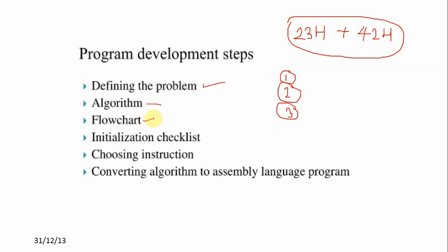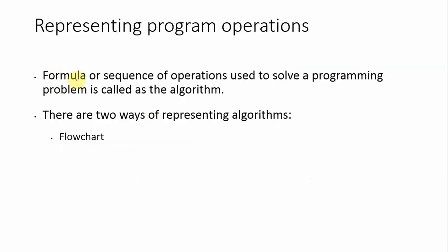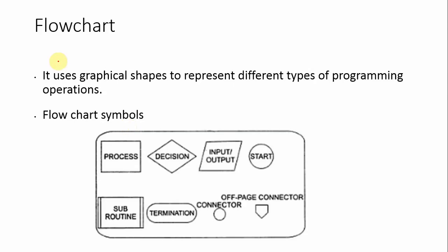The third step is the flowchart. A formula or sequence of operations used to solve a programming problem is called the algorithm. There are two types of representation of the algorithm: first, by using a flowchart, or second, by using the English language method in a one-two-three-four format. A flowchart is a graphical representation that uses graphical shapes to represent different types of programming operations.